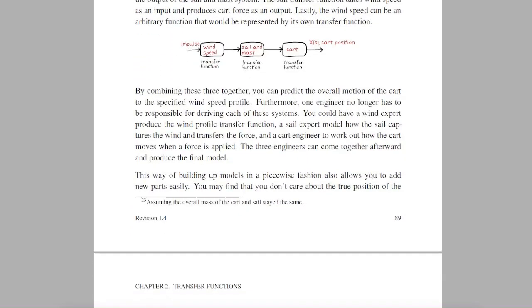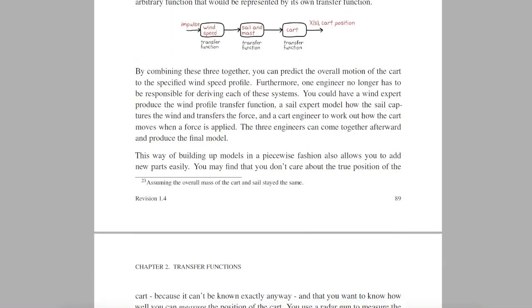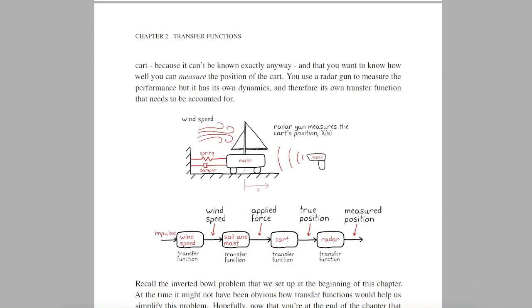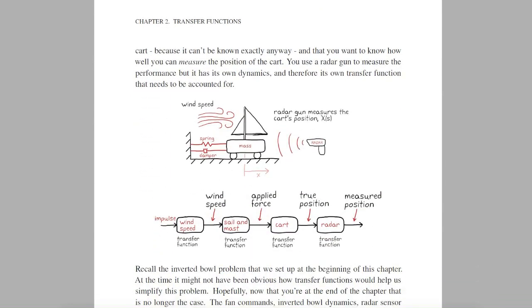We can also simply add new parts to the system, like a radar gun for measuring the cart's position. Just tack on another transfer function that converts the cart's true position to its measured position, which is pretty awesome.